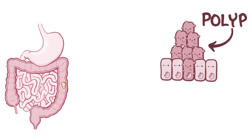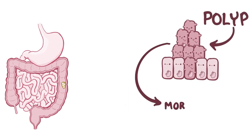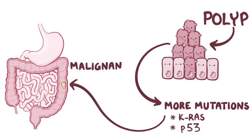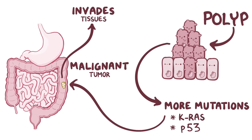Over time, these polyps might accumulate more mutations in other tumor suppressor genes, like the KRAS gene or the p53 gene, and ultimately it might become a malignant tumor, meaning that the cells might be able to invade neighboring tissues.